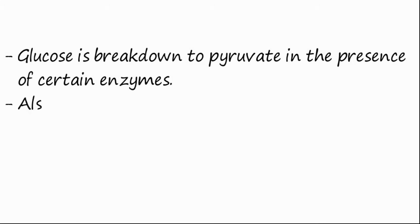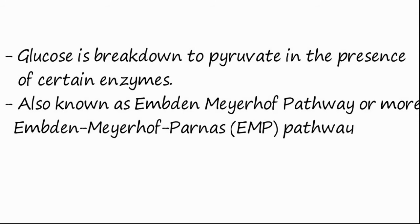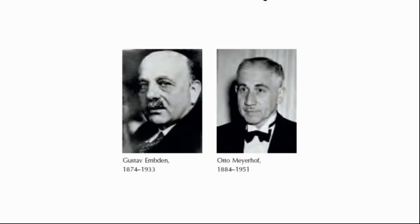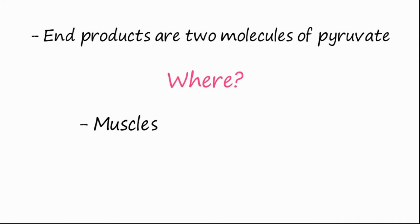This process is also known as Embden-Meyerhof-Parnas or EMP pathway. Gustav Embden, Otto Meyerhof, and Parnas were the German physiologists or biochemists who discovered the steps of this pathway. The end products are two molecules of pyruvate.